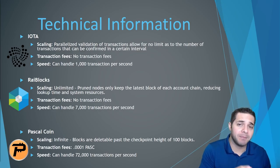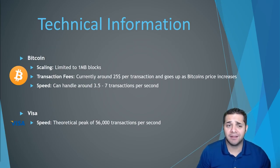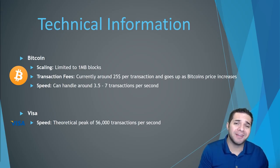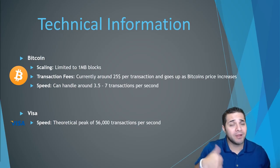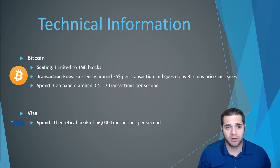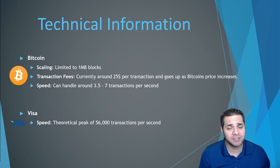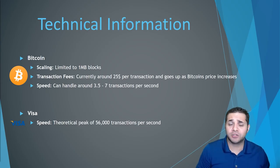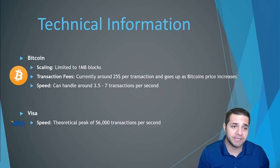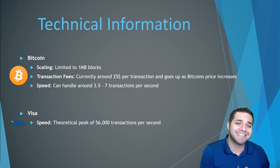Now let's compare these three to Bitcoin and Visa. For Bitcoin, scaling is super limited — only 1-megabyte blocks. Transaction fee is currently around $25 per transaction, and this scales with the price of Bitcoin; when Bitcoin goes up, transaction prices go up too. Speed: Bitcoin can handle around 3.5 to 7 transactions per second, which is why some transactions take several hours. For Visa, comparing speed only: theoretically they can peak at 56,000 transactions per second, but it's usually around 2,000.